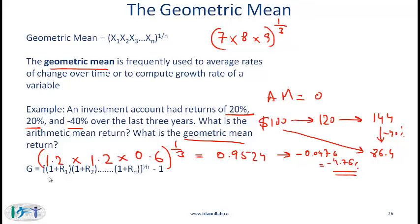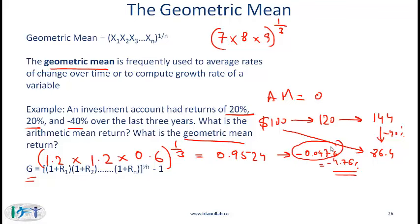The formula is: geometric mean return = [(1 + R1) × (1 + R2) × (1 + R3)]^(1/n) − 1. In our example: (1.2 × 1.2 × 0.6)^(1/3) − 1, where 0.6 represents 1 plus −0.4 for the third year. This is exactly the same structure as the time-weighted rate of return formula you saw in the previous reading.